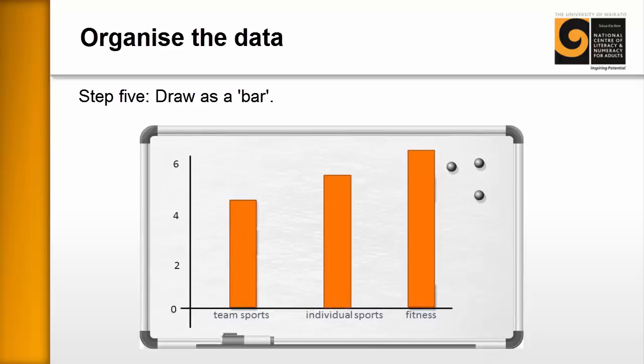Step five: draw as a bar. This is a subtle but important step. While the post-its are still there, ask the learners what should go on the vertical axis — what kind of numbers would be good. Often learners will number one through to ten, and depending on how many responses you get, that may or may not be appropriate. It's a good idea to challenge them about how the numbering might work. Here we've gone up in twos: zero, two, four, six, and you mark that on the board.